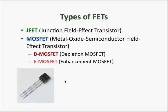There are two types of FETs that we are going to be studying in this lesson. The first type is the JFET, which is an acronym for Junction Field Effect Transistor. The second type is the MOSFET, which is an acronym for Metal Oxide Semiconductor Field Effect Transistor. For MOSFETs, there are two types: the D-MOSFET or depletion MOSFET, and the E-MOSFET or enhancement MOSFET.